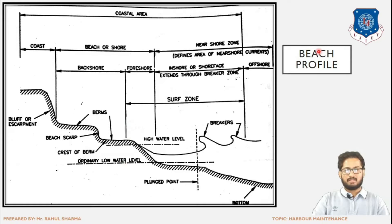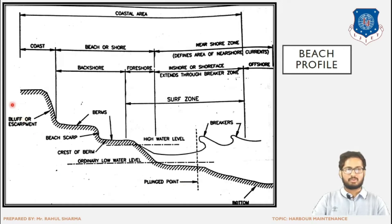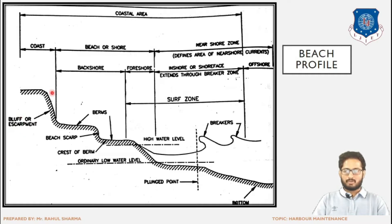This is the layout of the profile of the beach. We will be learning the labels of each and every component which exists in this profile. Let's begin from the landward most part. First, the bluff or escarpment — this is a slope which is connecting two horizontal surfaces, that is the berms. Berms are the horizontal surfaces which have been shown.